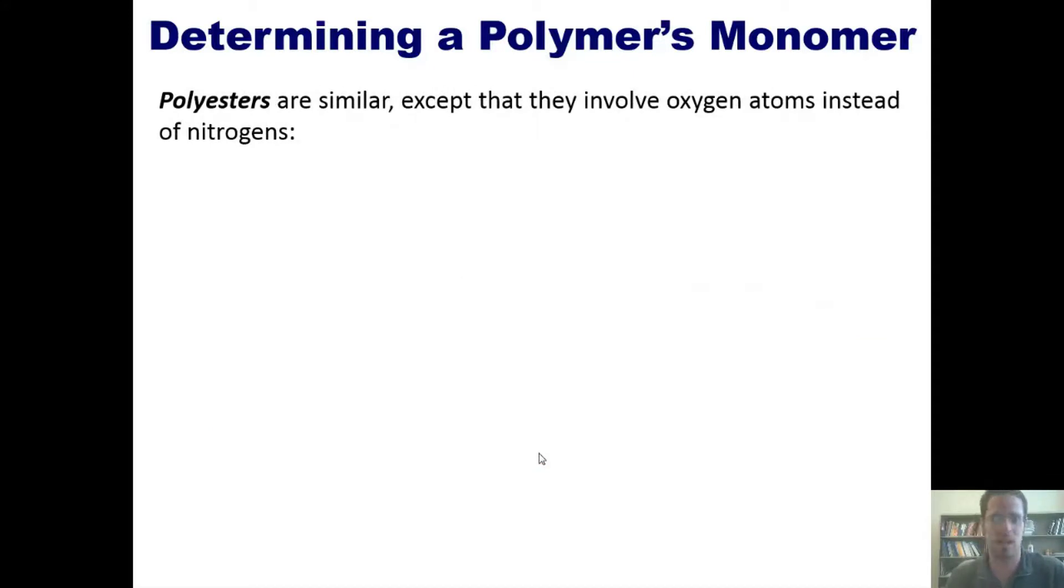Polyesters are similar to nylons, except that they involve oxygen atoms instead of nitrogens. If I start with a diol, it looks just like a diamine, except instead of NH2s on the ends, it's got OHs on the ends, and I react it with diacid chloride. Now, please keep in mind this R group represents some kind of carbon chain. It could be one carbon long, it could be many carbons long, and it could have all kinds of branches in it or not. It depends on the individual polymer.